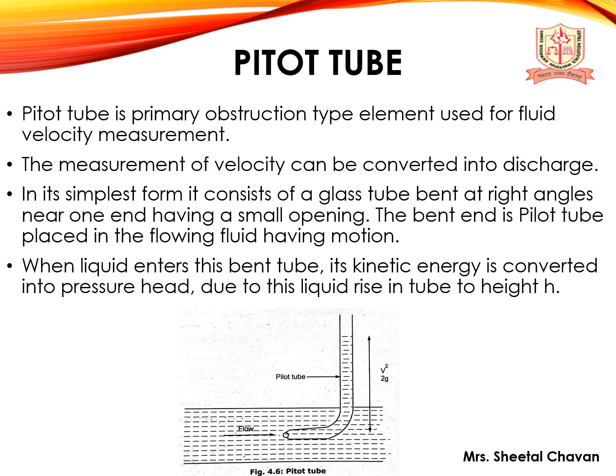The pitot tube is a primary obstruction-type element used for fluid velocity measurement. The measured velocity can be converted into discharge. In its simplest form, it consists of a glass tube bent at a right angle near one end with a small opening. The bent end is placed in the flowing fluid, converting the liquid's kinetic energy into pressure head, causing the liquid to rise in the tube to height h. The flow velocity is given by V = √(2gh).